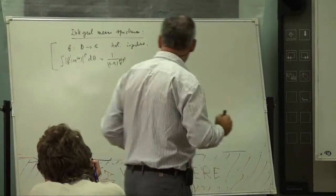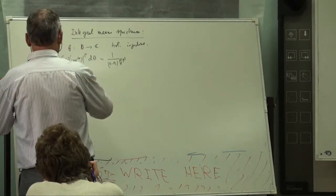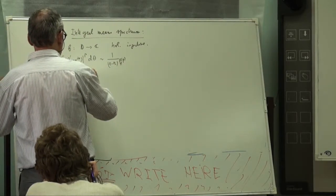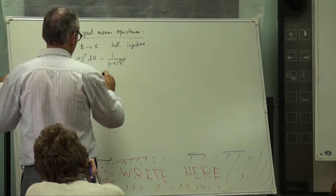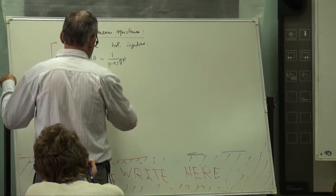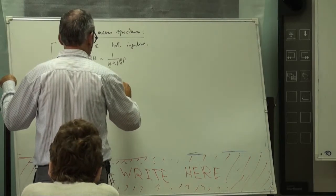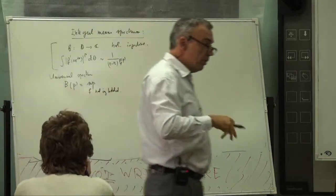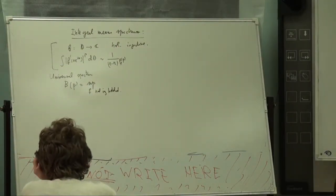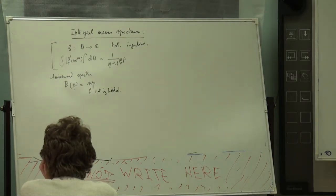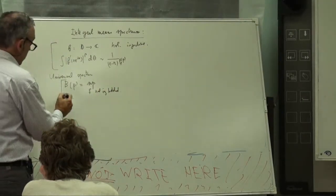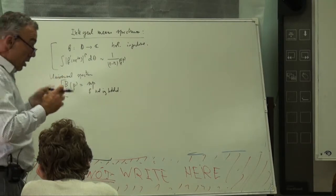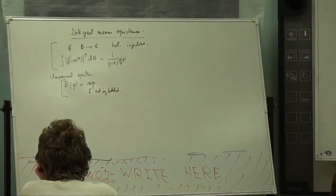Beta of p depends on f, so we write beta_f of p. We can then speak about the universal spectrum b of p, defined as the supremum over all f—holomorphic, injective, and bounded. The study of this universal spectrum is a very interesting subject and many things are unknown in this setting.